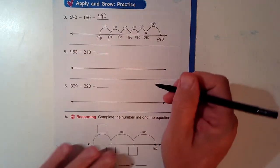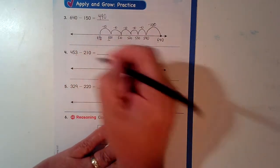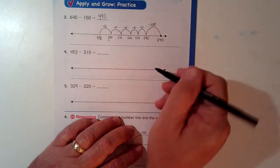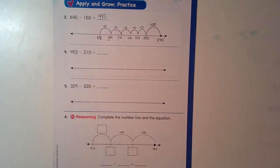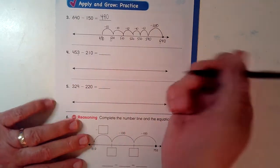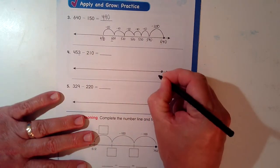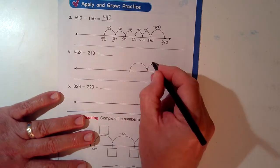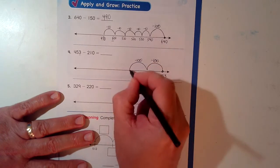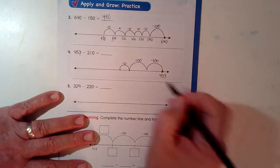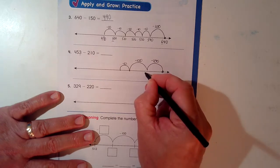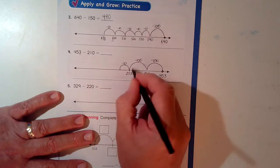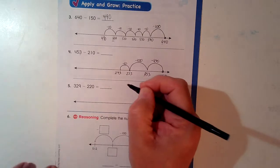453 minus 210. Now notice it's not a zero in the ones place. As long as we stay focused and don't trade, or don't change any of the ones, then we'll be fine. 453. Let's start here. 453 minus 1, 2, 100s. And one set of 10. 453 minus 100, 353. Minus 100, 253. Minus 10, 243.